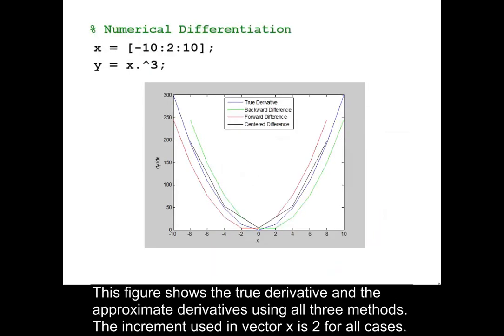This figure shows the true derivative and approximate derivatives using all three methods. The increment used in vector x is 2 for all cases.